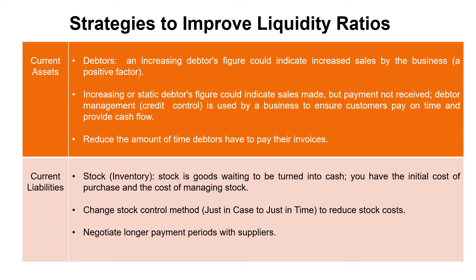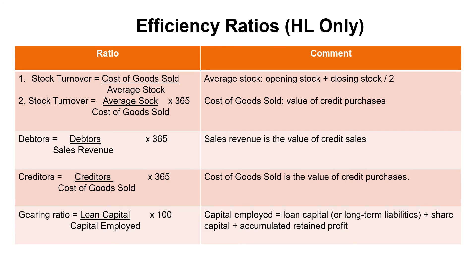Look at your current liabilities and stock control methods — just-in-time versus just-in-case. Lots of stock sitting on the shelf is simply money being tied up until you sell it, so review your stock control method. Also look at the length of time you have to pay your suppliers: can you negotiate longer payment periods — 30, 60, or 90 days? Longer payment periods give you more time to find the money. Efficiency ratios are for HL only students.